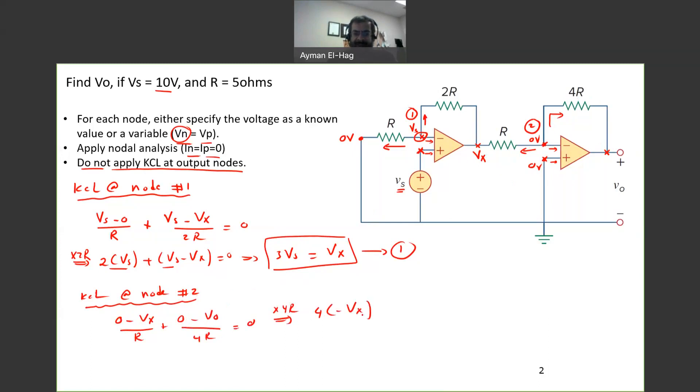Plus zero minus Vout, the current that going back to the output, divided by 4R is equal to zero. So I will multiply everything by 4R. So we will have 4 times minus Vx minus Vout equal to zero. Or minus 4Vx is equal to Vout. So this is my second equation.